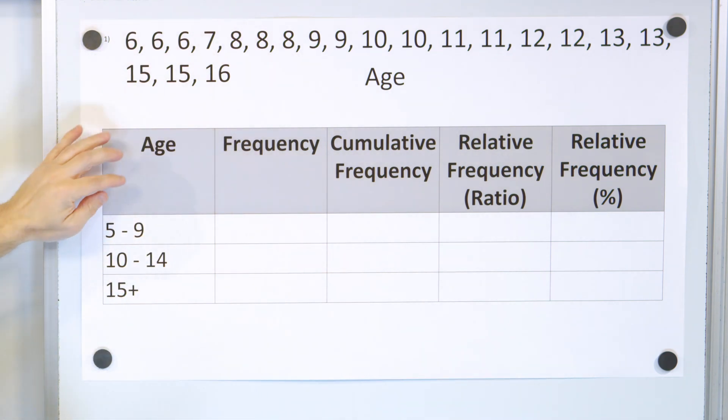So we create various buckets in a frequency table. We have ages 5 to 9, ages 10 to 14, ages 15, older than 15. And you could create the table with more granularity in the ages, but these are the buckets that are created here.